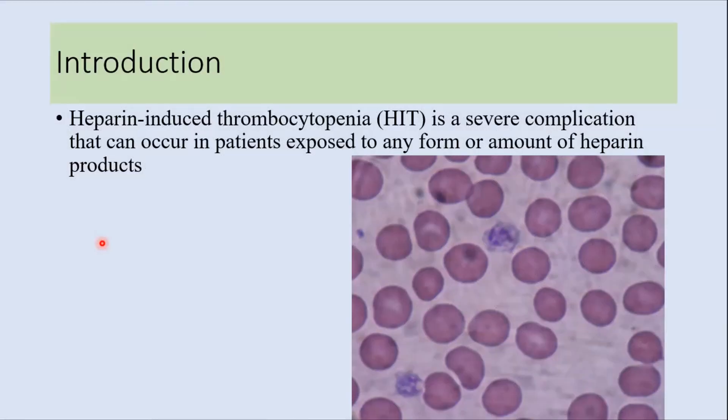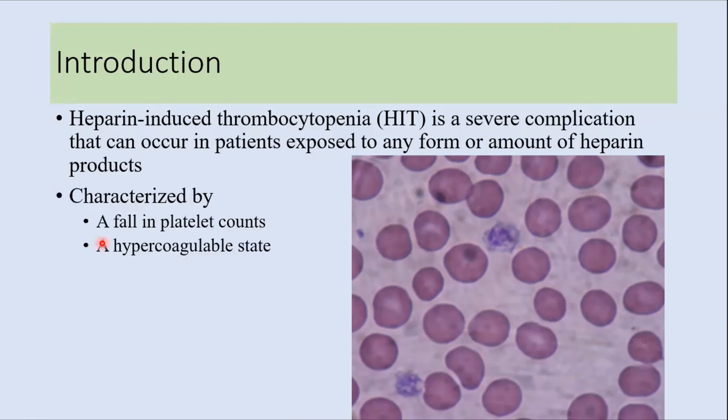Today I will discuss heparin-induced thrombocytopenia, which is a severe complication that occurs in patients exposed to any form or amount of heparin products. This condition is characterized by a fall in platelet count and a hypercoagulable state. Heparin-induced thrombocytopenia can be classified into type 1 and type 2.